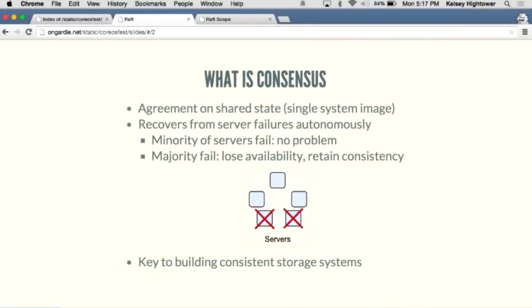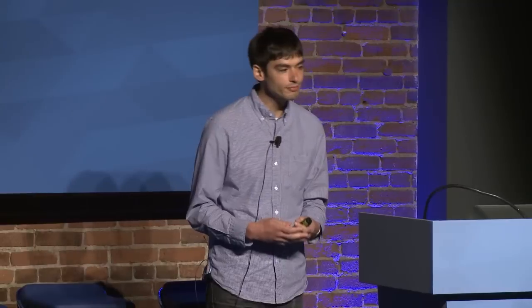Consensus is really: how do we reach agreement on shared state? People sometimes call this single-system image — we want to look at a cluster with shared state as if it was just one beefy machine that can never fail. It should recover from internal server failures autonomously. In a five-server cluster, if two servers fail — just a minority — the whole cluster should remain available and maintain consistency. If a third one fails, we'd lose our majority and lose availability, but it would remain consistent and come back online once that third server recovers.